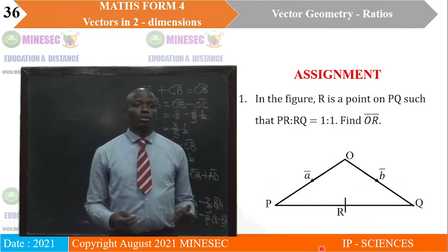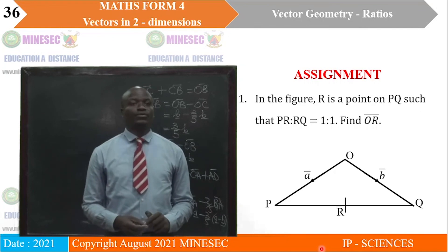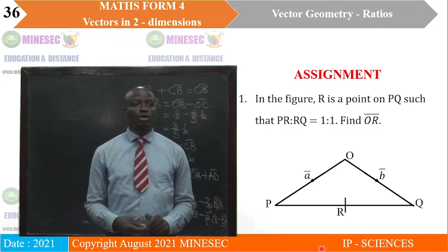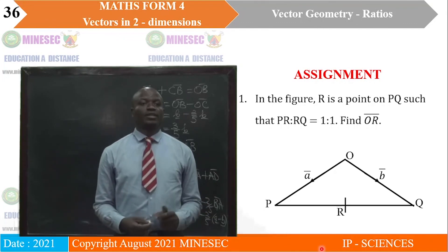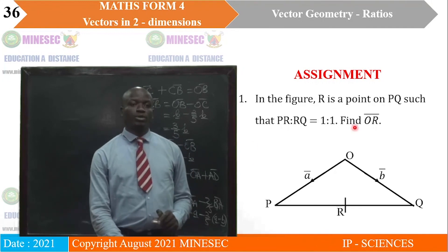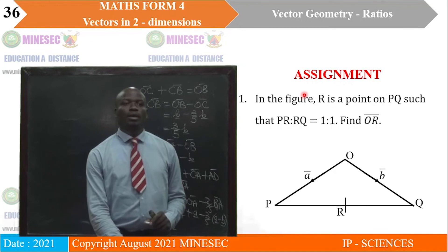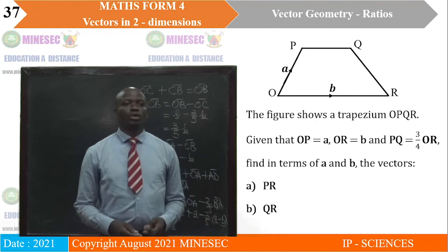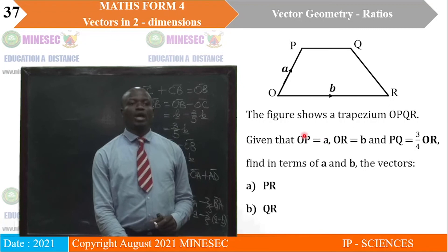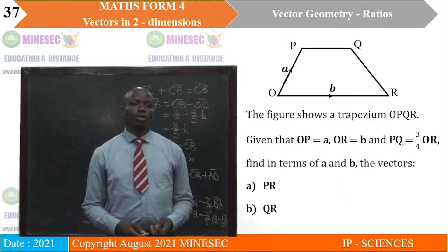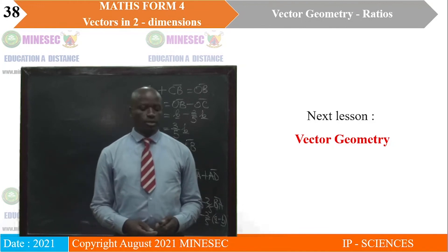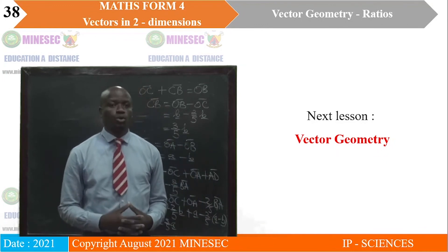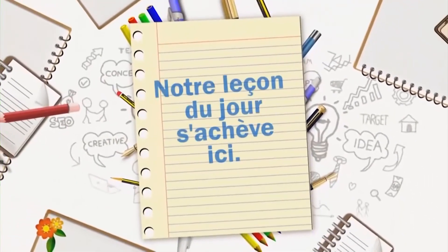To keep you active and to verify that you understood what we've done, here is an assignment. Question 1: we have a geometrical diagram and we are expected to find vector OR. Question 2: we also have a diagram and we need to find vector PR and vector QR. We've come to the end of our lesson, and in the next lesson we'll still be looking at vector geometry. Thank you.